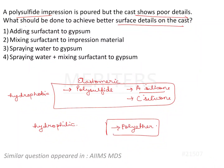Now let us have a look at the options. What should be done to achieve better surface details on the cast? Adding surfactant to gypsum makes no sense — you have to add it to the impression material. Mixing surfactant to impression material — yes, that is correct. Spraying water to gypsum — no, that would just change the water-powder ratio. Spraying water plus mixing surfactant to gypsum — no. We are not going to change the properties of gypsum. Gypsum is the liquid, and we minimize the contact angle on the impression end. So the answer is to mix surfactant to impression material.